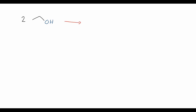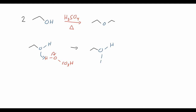Another way to synthesize ethers is through strong acids. Starting with two moles of ethanol using a sulfuric acid catalyst and heat, we can form diethyl ether. The mechanism begins with the ethanol starting material being protonated by the sulfuric acid — because the alcohol is slightly basic, it is protonated to give the protonated ethanol with a positive formal charge on the oxygen.